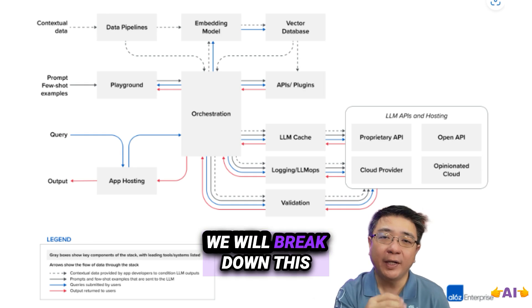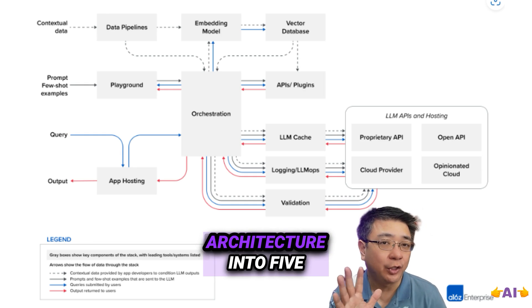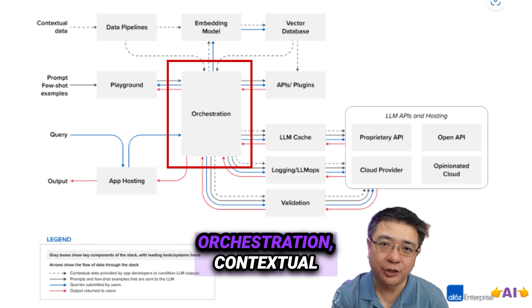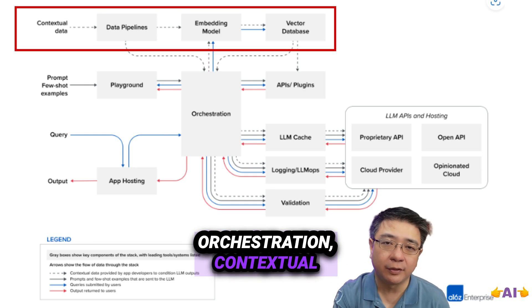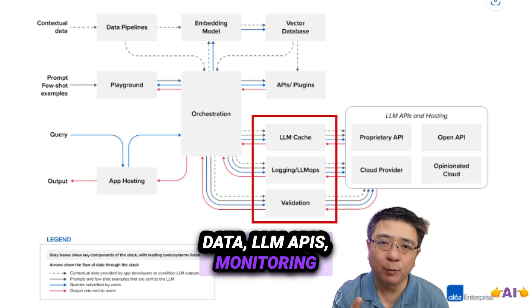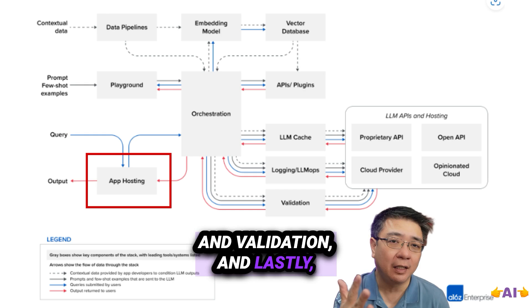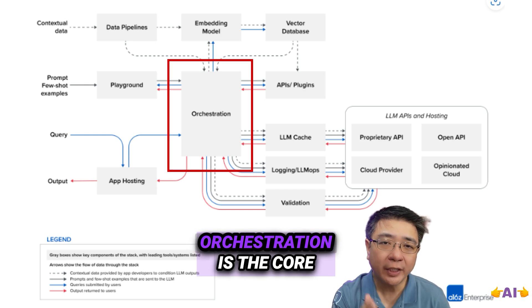We will break down this architecture into five components: orchestration, contextual data, LLM APIs, monitoring and validation, and lastly, app hosting.